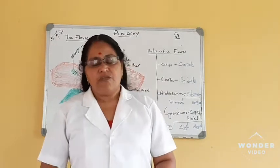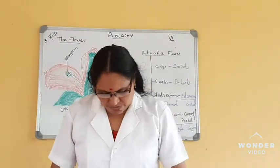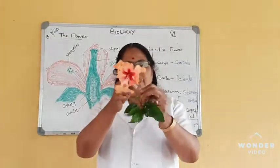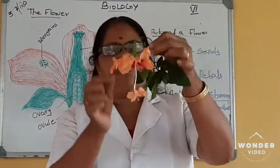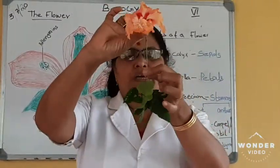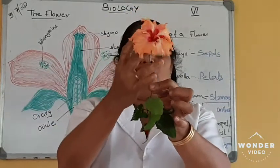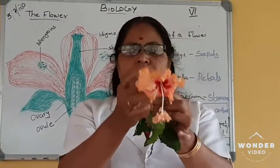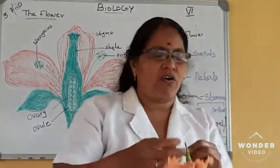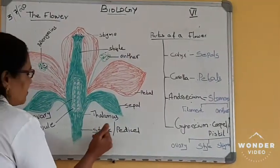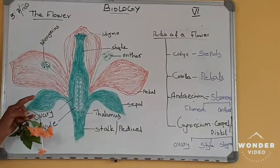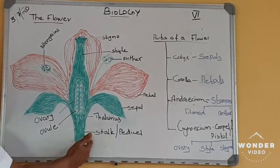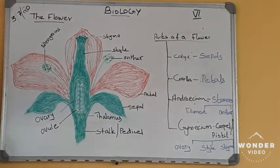Let us see what is the structure of a flower. First of all you have to know: a flower is attached on the stalk. Here the flower is attached on the stem with the help of a stalk. You can see this long stalk. The stalk is called the pedicel, or flower stalk. Here is the structure of a flower on the board — the stalk of the flower is called the pedicel.